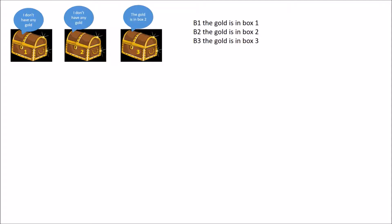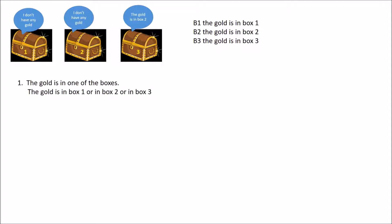Let's define our notation. B1 means the gold is in box one, B2 means the gold is in box two, and so on. The first statement — the gold is in one of the boxes — expands into three possibilities: the gold is in box one, or in box two, or in box three.